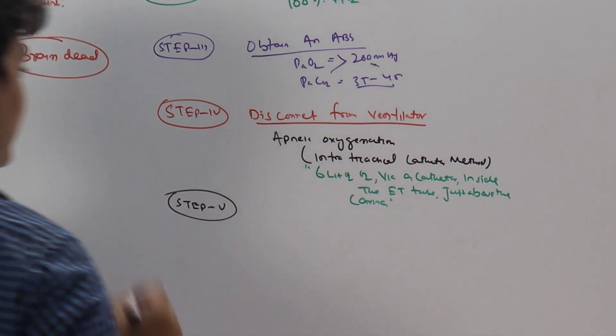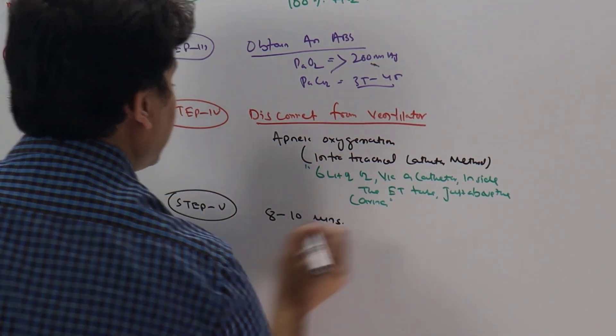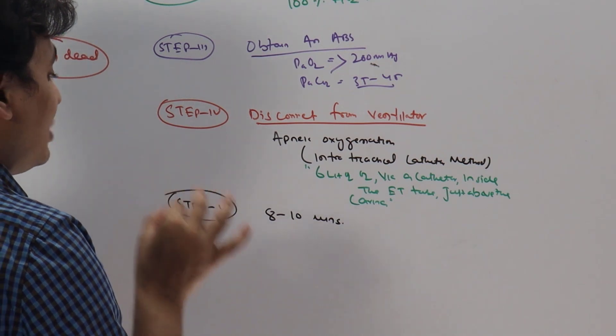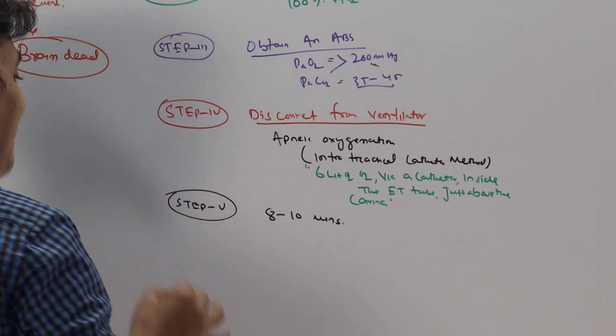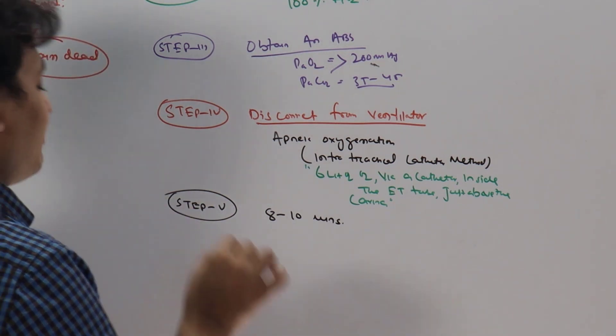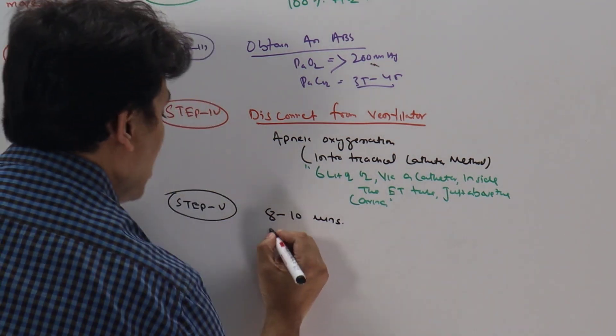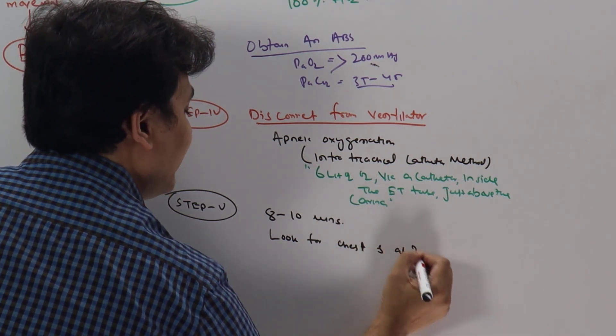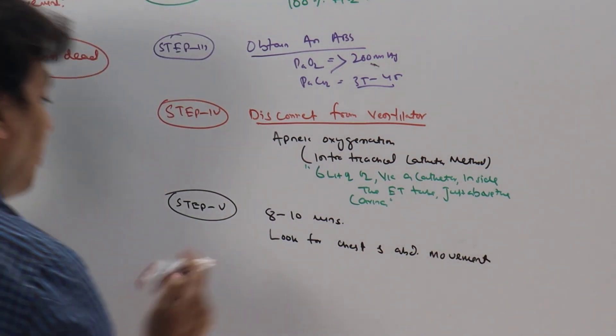Step 5: do this for 8 to 10 minutes. Why 8 to 10 minutes? Because when you do apnea test, the carbon dioxide increases by 2 to 3 mmHg per minute, but this equation is not linear. So you have to do for 8 to 10 minutes for a rise of carbon dioxide of at least 20 mmHg from the baseline. During this time, look for chest and abdomen movement and monitor vitals, especially blood pressure and SpO2.